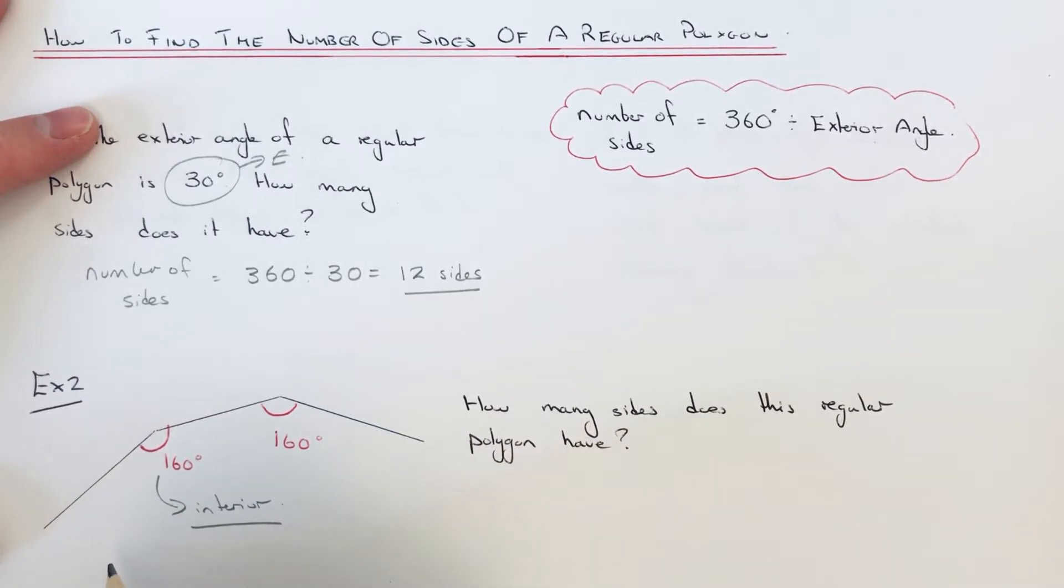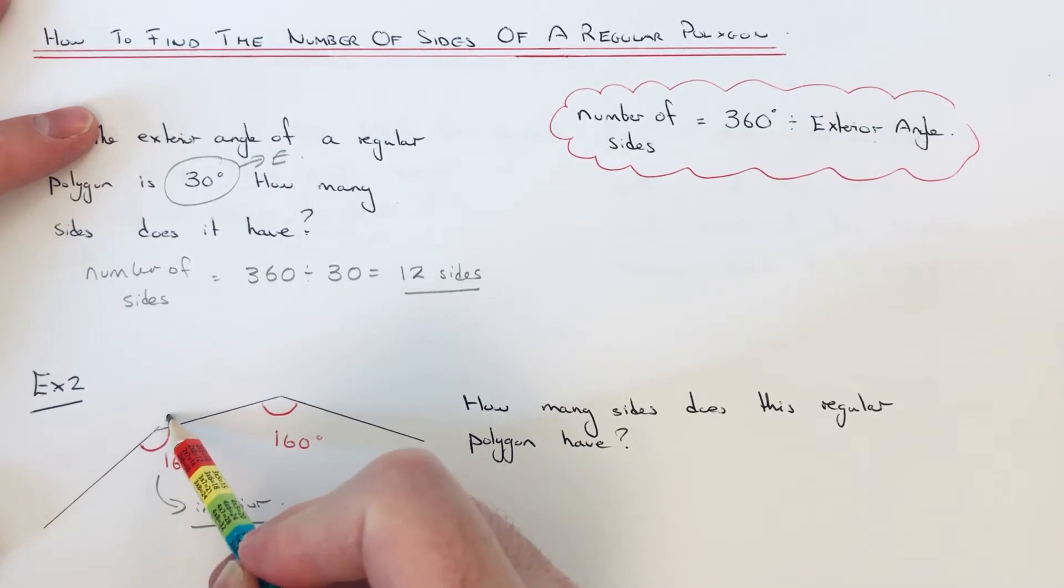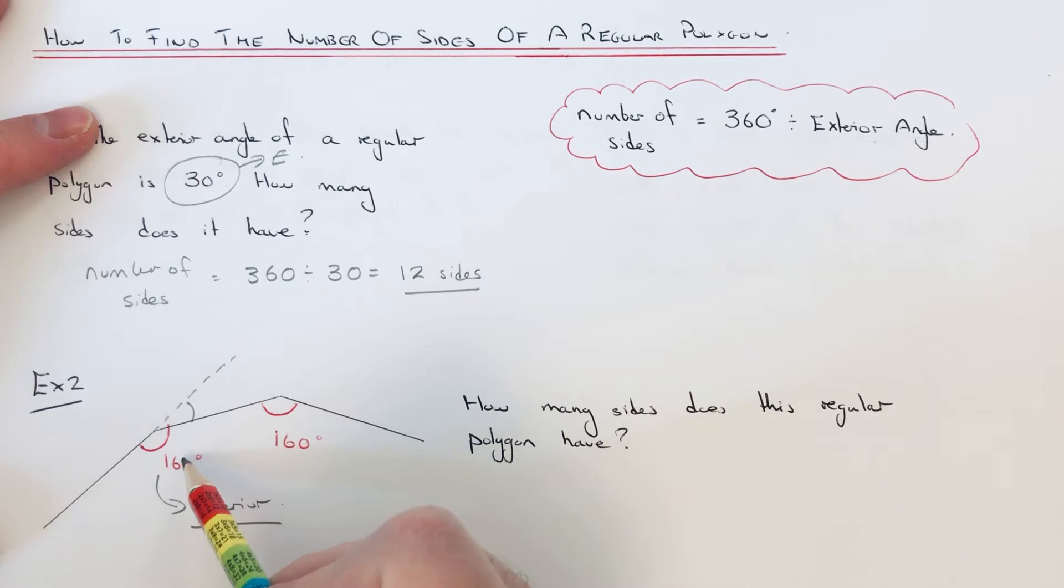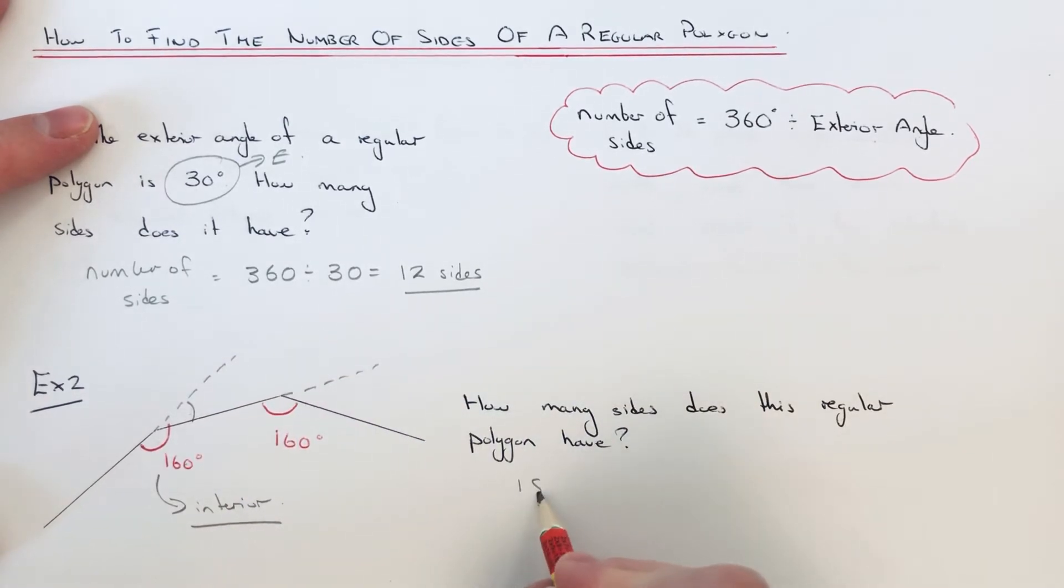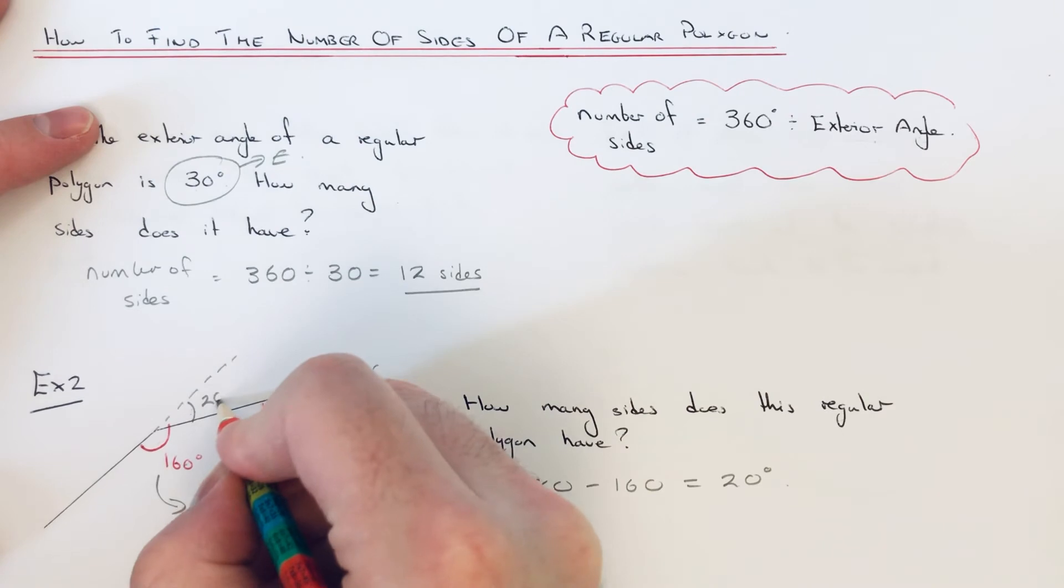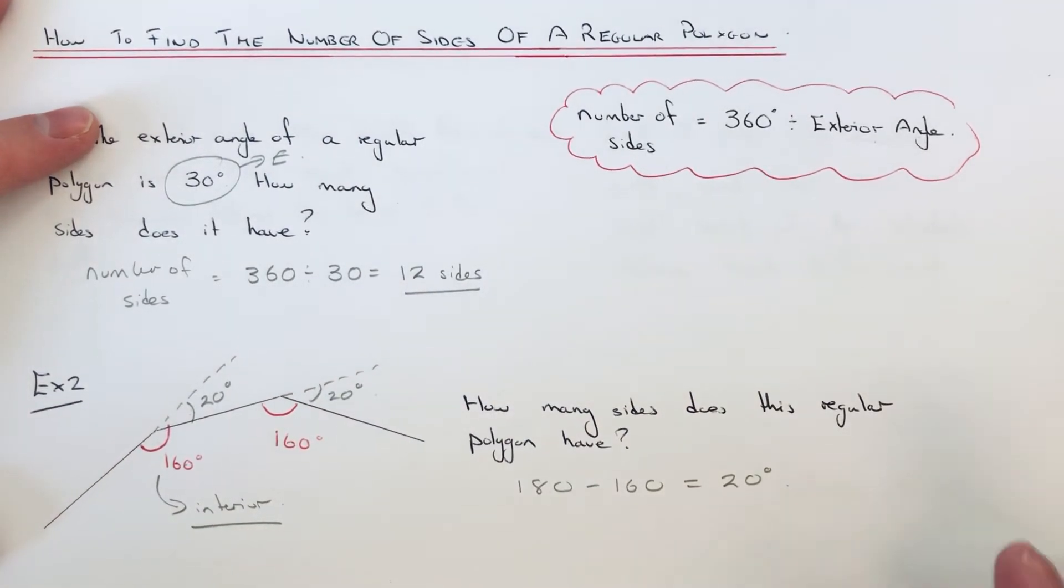Before we can work out the number of sides, we need to get the exterior angle. You just need to take the interior angle away from 180, because the interior and the exterior add up to 180. So if we go 180 take away 160, that will give us 20 degrees. So our exterior angle is 20 degrees.